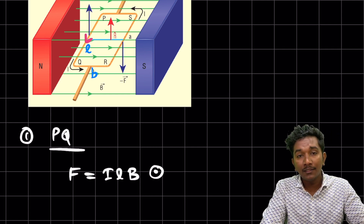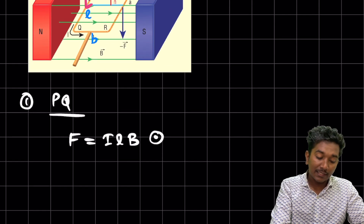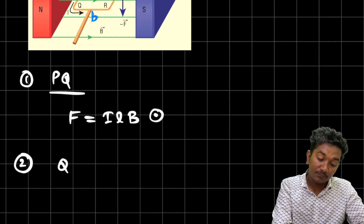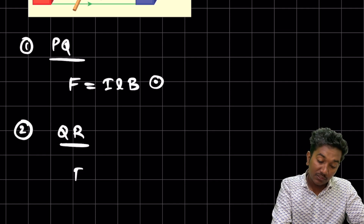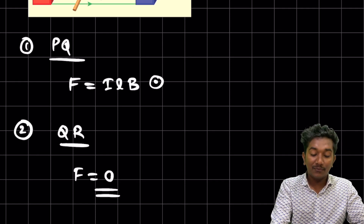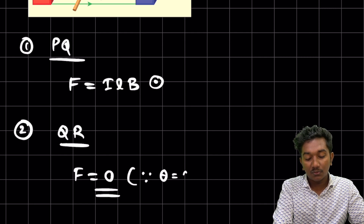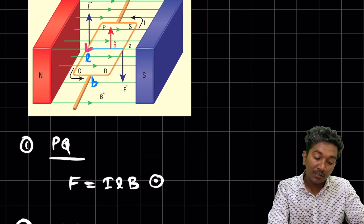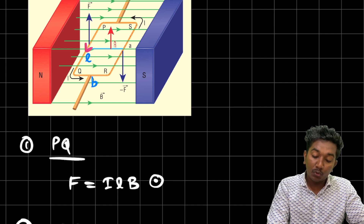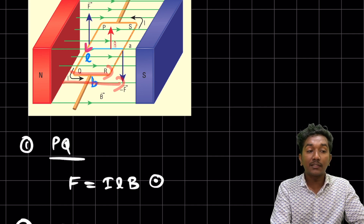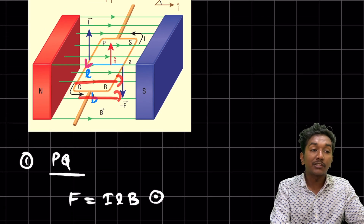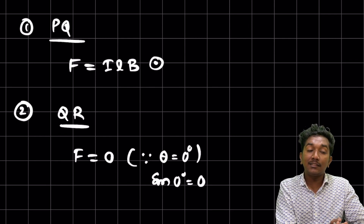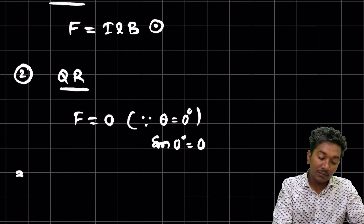Now, what about force on conductor QR? F = 0. Why zero? Because theta equals zero. The angle between the current element IL and the magnetic field is zero — both are in the same direction. Since sin(0) = 0, the force on QR is zero.